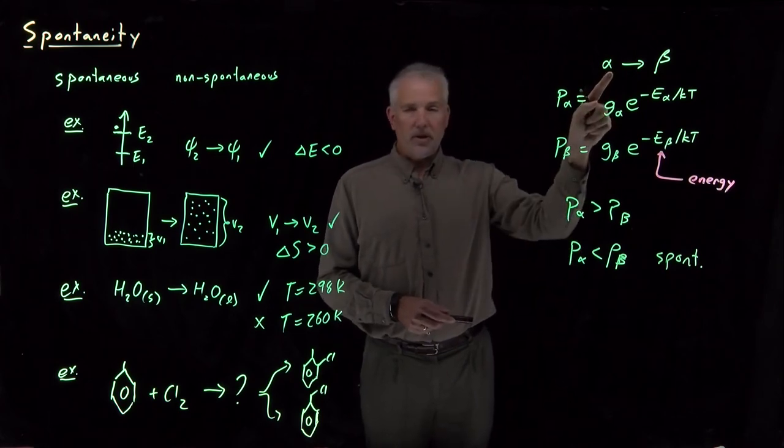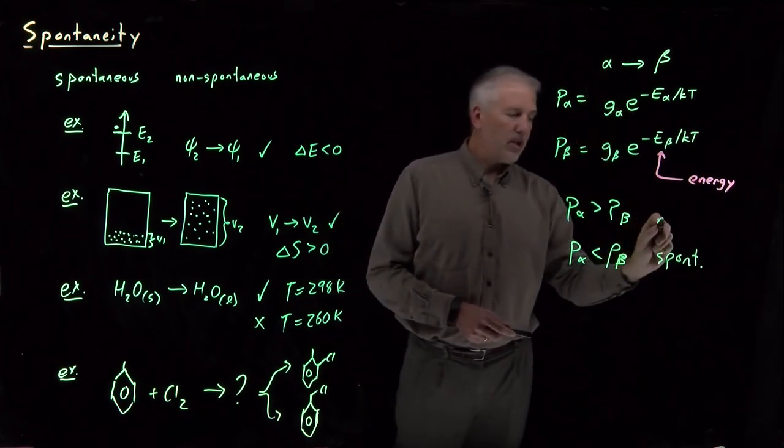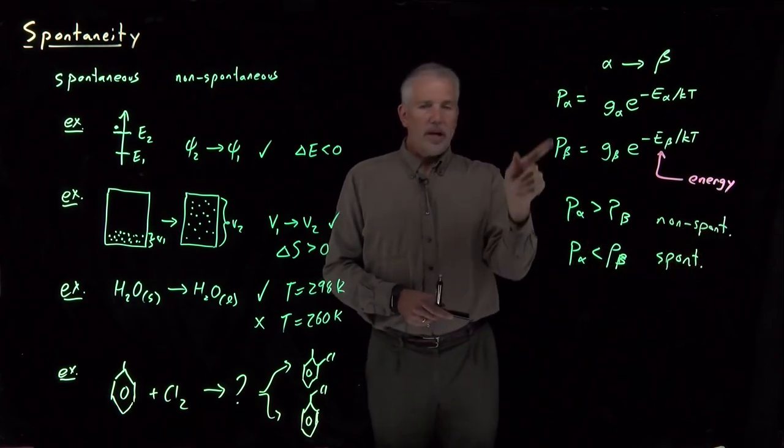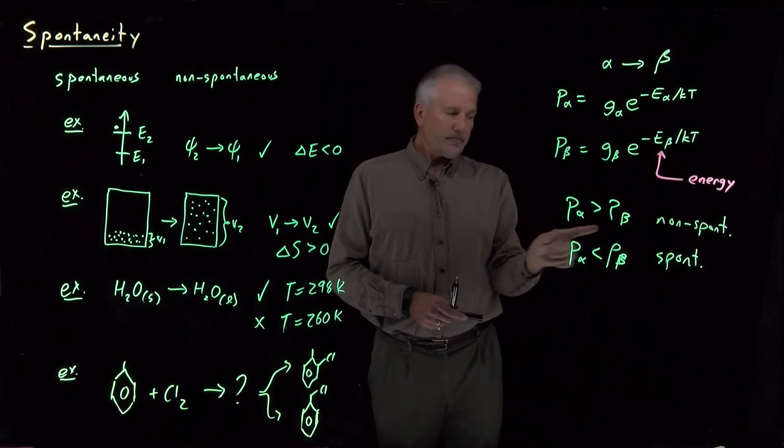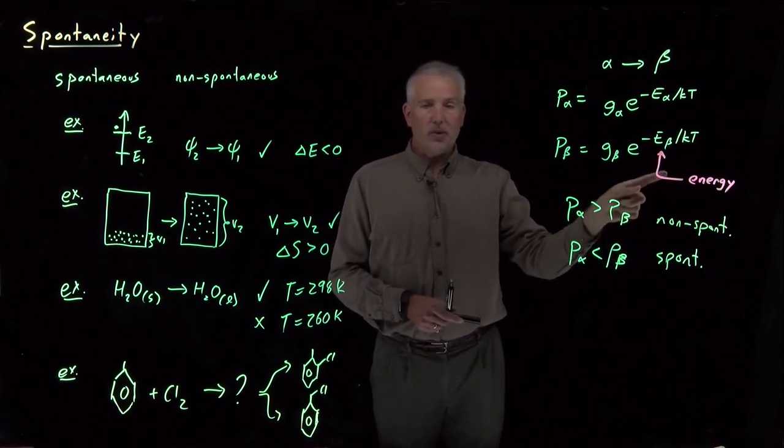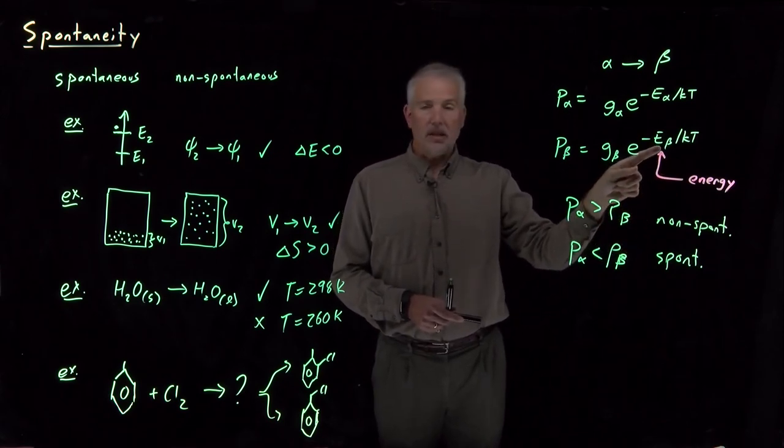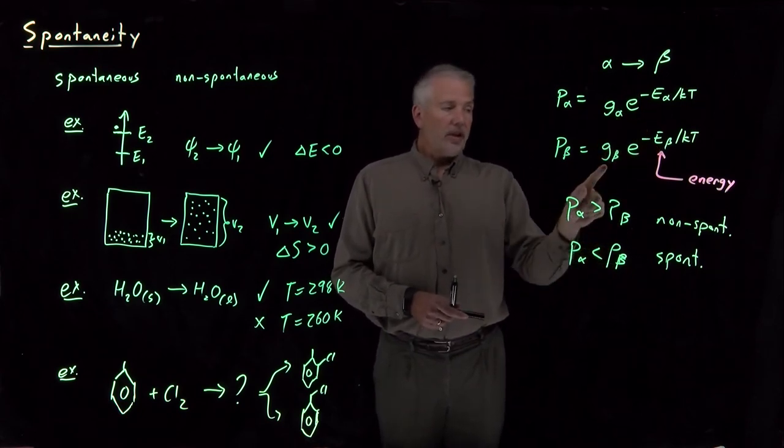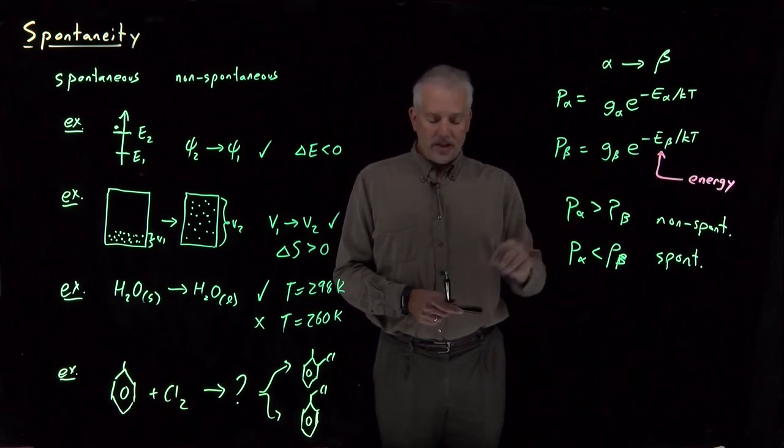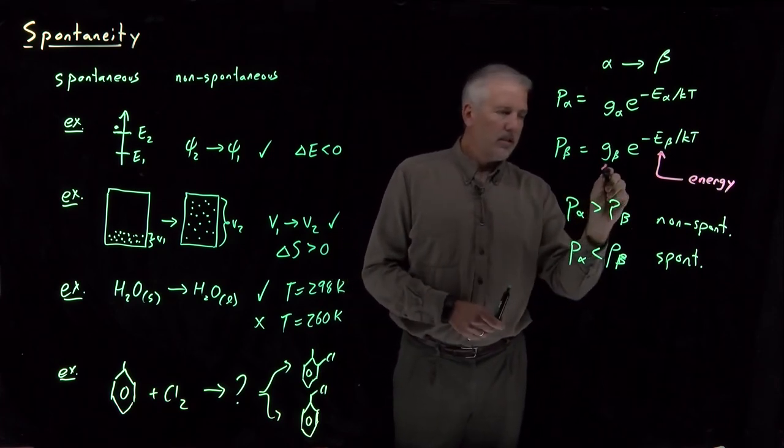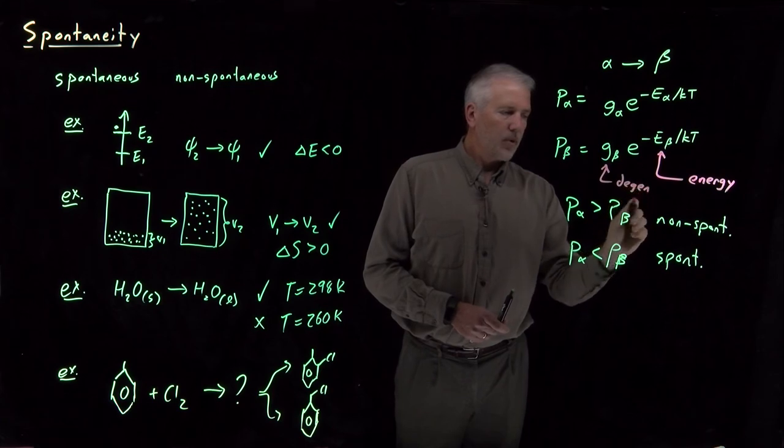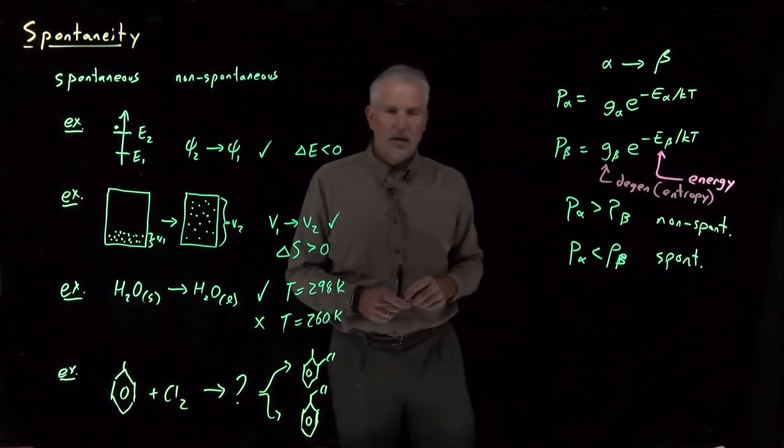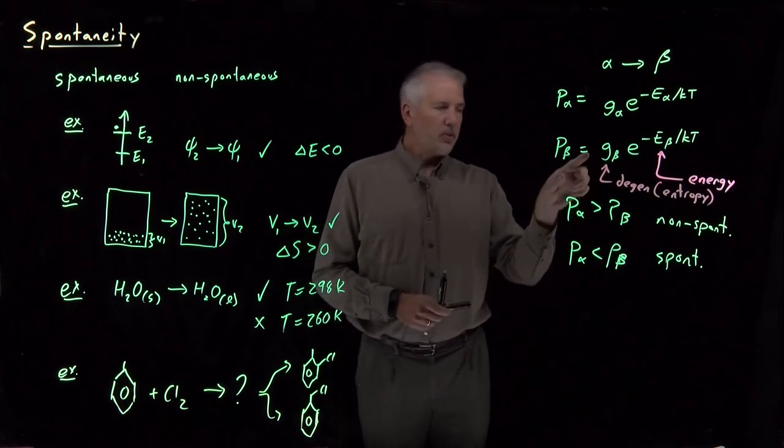On the other hand, if the probability is larger for alpha than beta, then that'll be a non-spontaneous reaction. So if we're able to calculate the probabilities, we'll know whether it's spontaneous or not. Sometimes energy is what matters. If the energy of beta is lower than the energy of alpha, then the energy can affect the probabilities. On the other hand, sometimes it's the degeneracy, or phrased differently, the entropy of these systems that determines which is more probable.